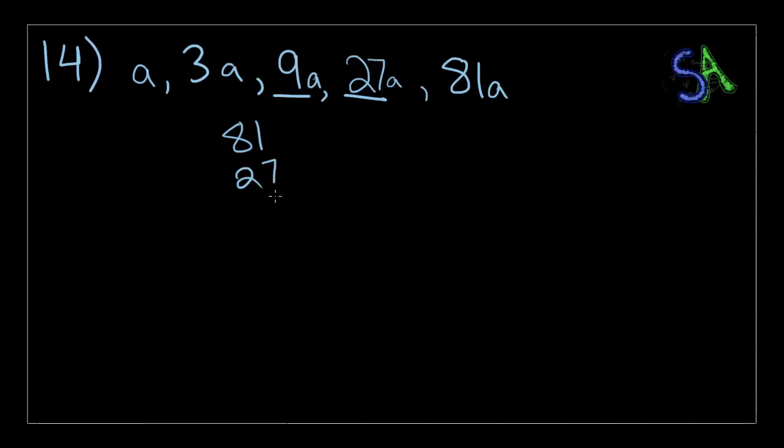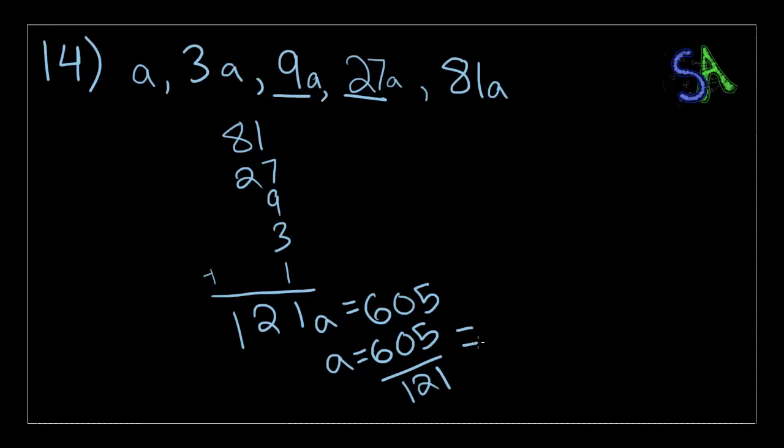Now we're going to add all this together. So, 81, 27, 9, 3, 1, and all of these are just a's. That's 8 plus 9a is 17, 18, 19, 20, 21, carry over 2, 10, 12. So 121a, and the sum of these five terms is equal to 605. The value of a will be 605 divided by 121, which is equal to 5, which is the correct answer.